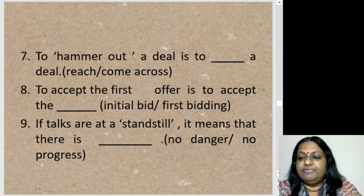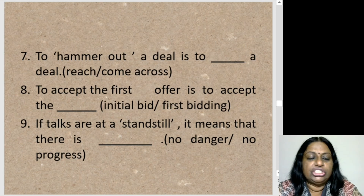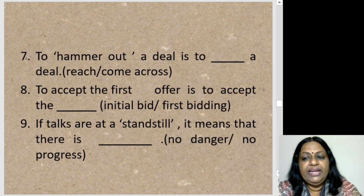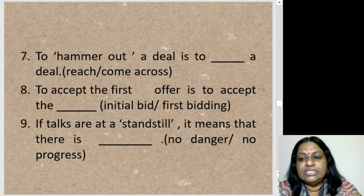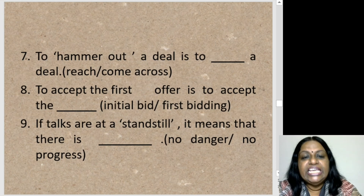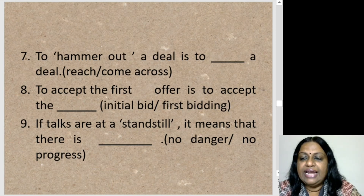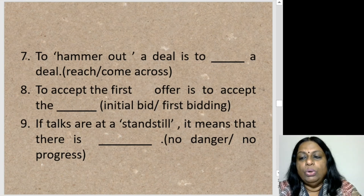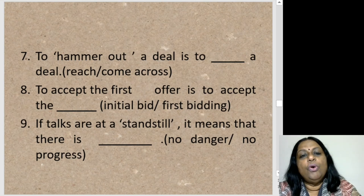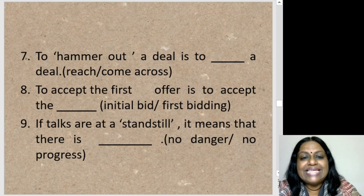Sentence eight: 'To accept the first offer is to accept the blank bid.' The options are 'first bidding' or 'initial bid.' Initial and first mean the same, but the technical term used in business is 'initial bid.' Sentence nine: 'If talks are at a standstill, it means that there is blank.' The options are 'no danger' or 'no progress.' The answer is no progress — the talks have come to a standstill, meaning no progress is happening.